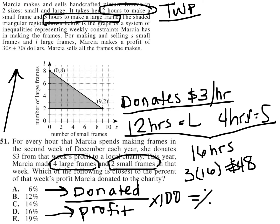So she donated $48 — that's the numerator of our fraction. Now let's figure out the denominator: how much profit did she make? Looking at the information provided, we see there is a formula to figure out the profit.